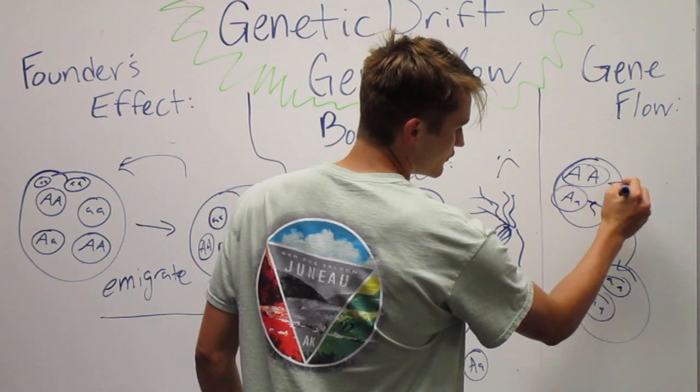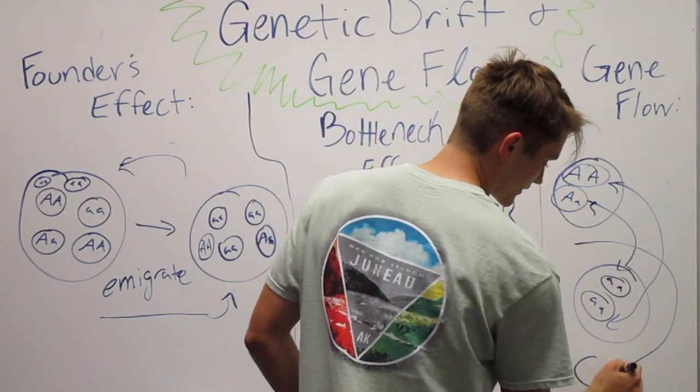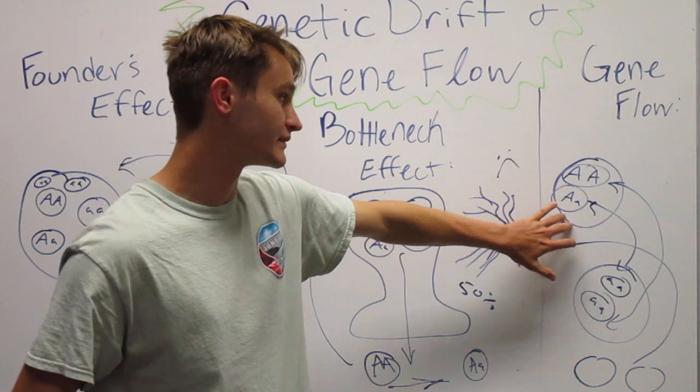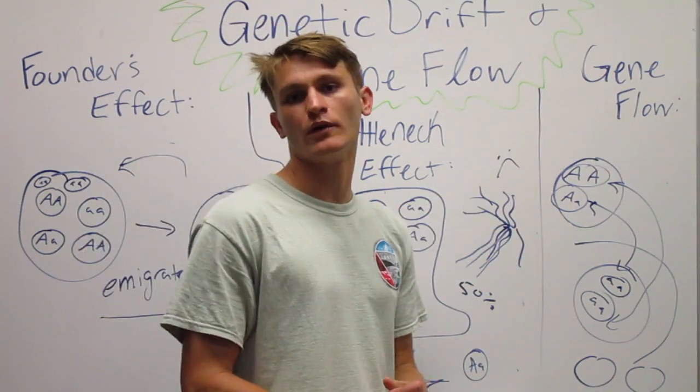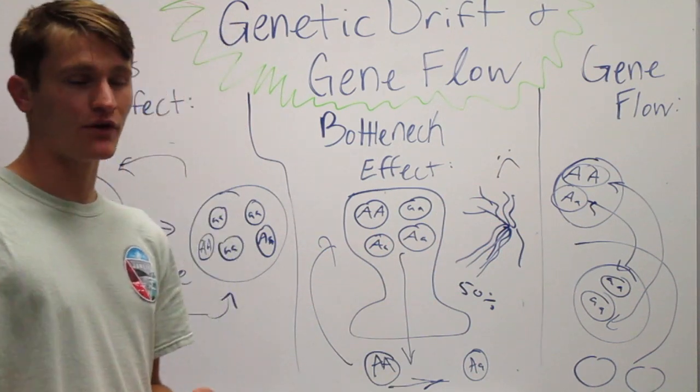These can always mingle and produce different offspring, and their offspring do not have to represent or do represent their starting point or what their ancestry is. So that's gene flow. It's a relatively simple idea.